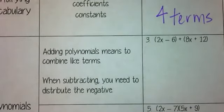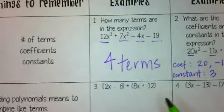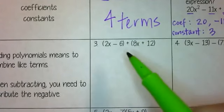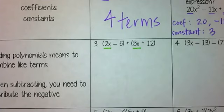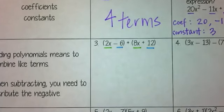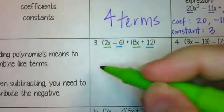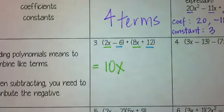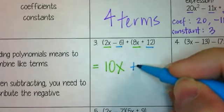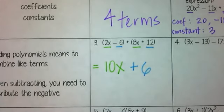When we add and subtract polynomials, basically all we're going to do is combine like terms. For example number three, I'm looking at this binomial being added to this binomial. I'm going to search for like terms — those two are like terms, and those two are like terms. So 2x plus 8x would be 10x, and then negative 6 plus positive 12 would be positive 6. That is the solution, because 10x and 6 are not like terms.